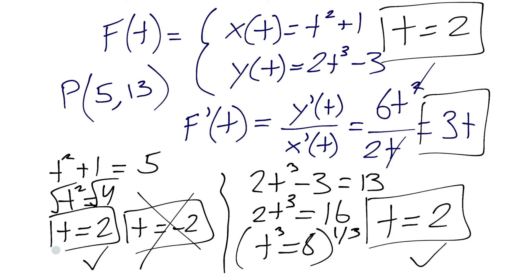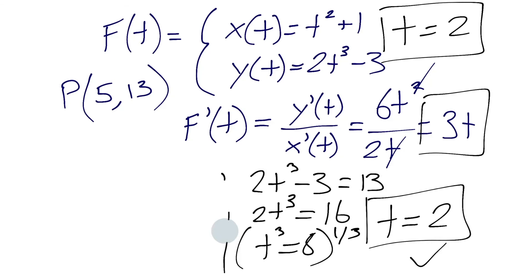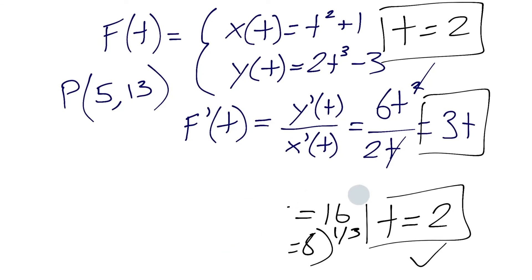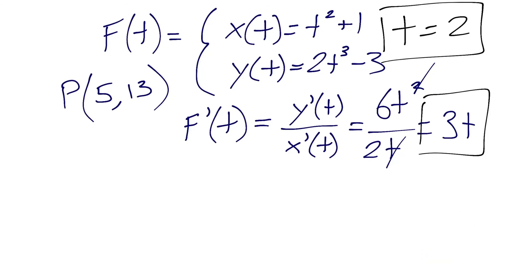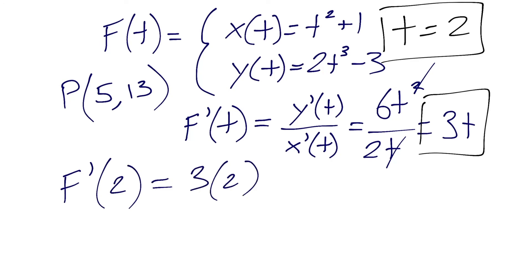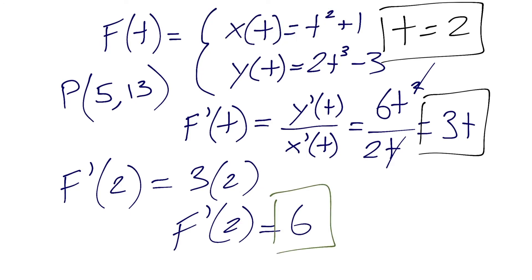Now we plug t equals 2 into f prime of t equals 3t. So f prime of 2 equals 3 times 2, which equals 6. That is our slope of the tangent line for this parametric curve at the point (5, 13). And that's it for this video — thanks for watching.